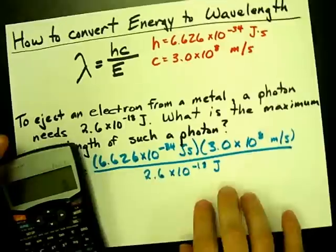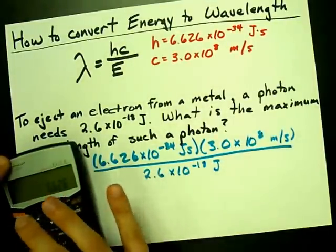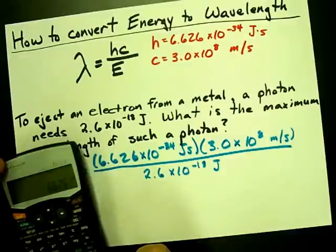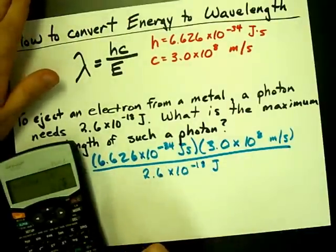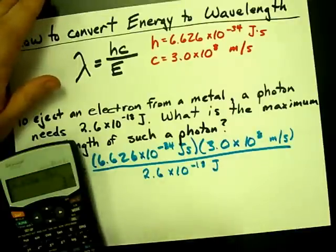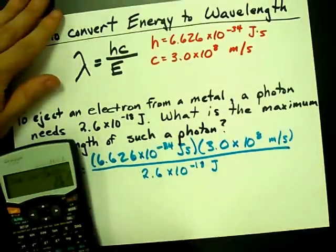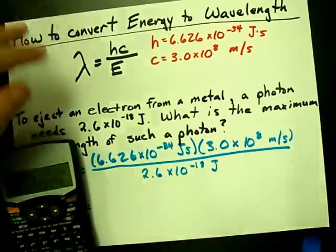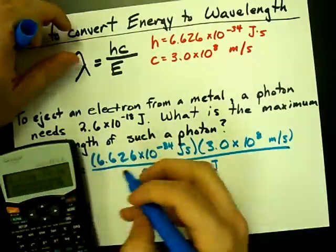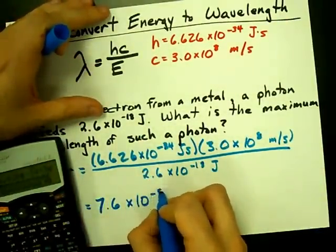What do you get? 6.626 times 10 to the power of negative 34, times 3, times 10 to the power of 8, divided by 2.6 times 10 to the power of negative 18. I get this number, which turns out to be 7.6 times 10 to the minus 8.